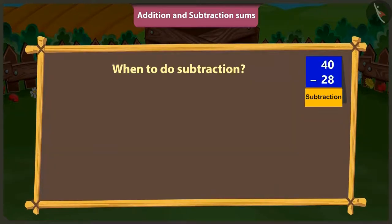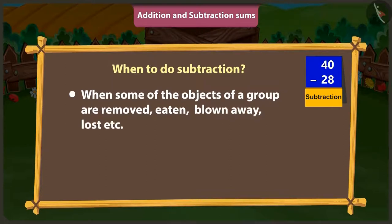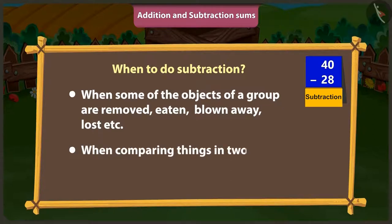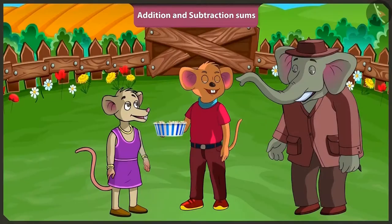And when to do subtraction? When some of the objects of a group are removed, eaten, blown away, lost, etc., then we have to do subtraction. And when comparing things in two groups — how many less or how many more — to know all that, we also have to do subtraction.